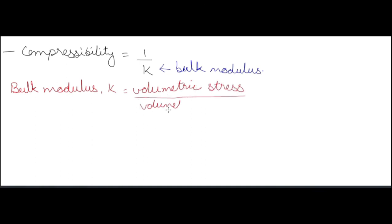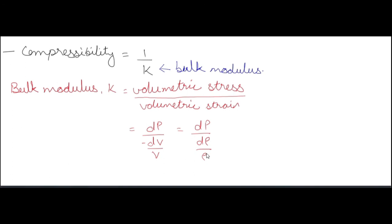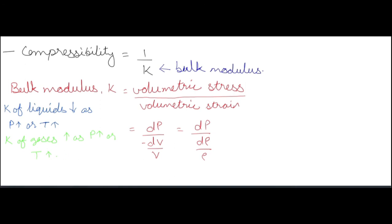Compressibility = 1 / bulk modulus. Bulk modulus K = volumetric stress / volumetric strain = dP / (−dV/V). Since increasing pressure decreases volume, a negative sign appears. In terms of density: K = dP / (dρ/ρ) — positive sign since pressure increase causes density increase. For liquids, bulk modulus decreases as pressure and temperature increase. For gases, bulk modulus increases as pressure or temperature increases — opposite behavior to liquids, similar to viscosity behavior.